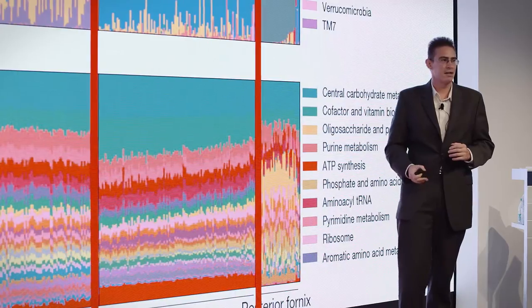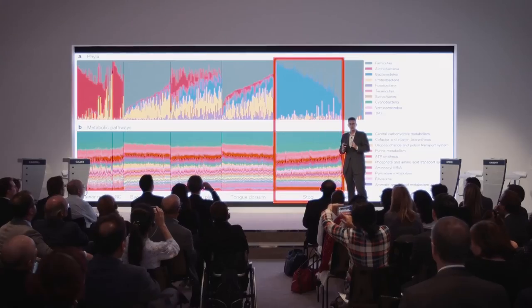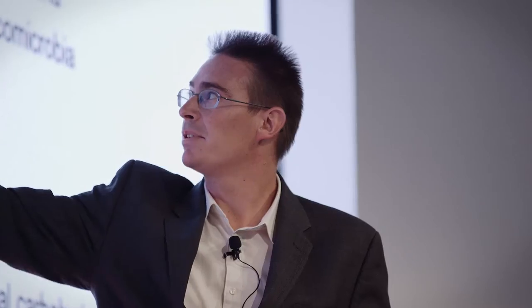And if we just focus in on the gut, these different colors represent different kinds of microbes. And what we can see is that even these healthy people had completely different kinds of microbes from one another.